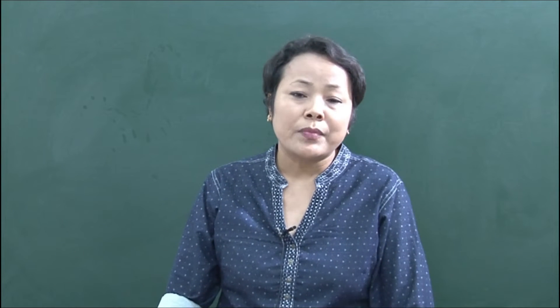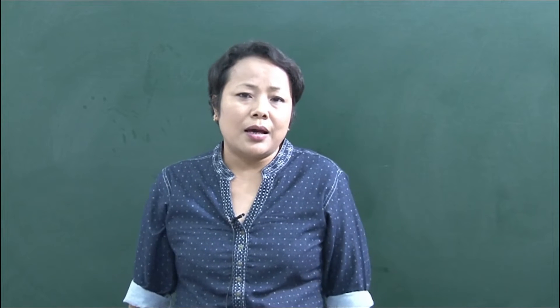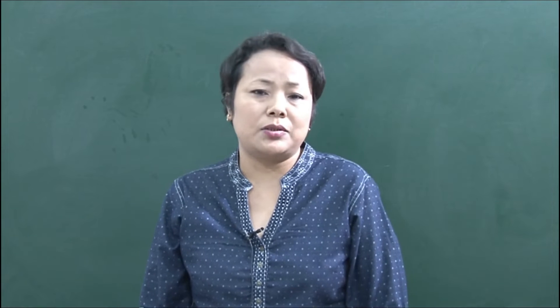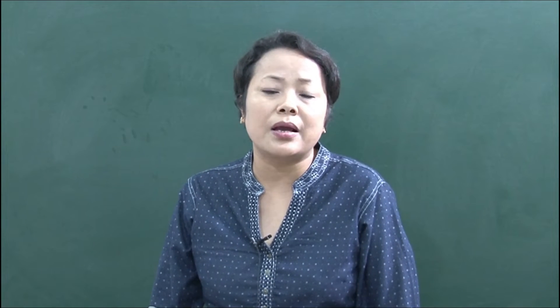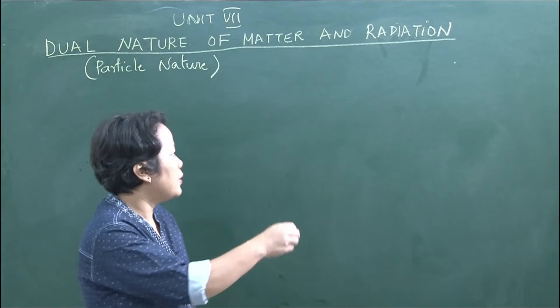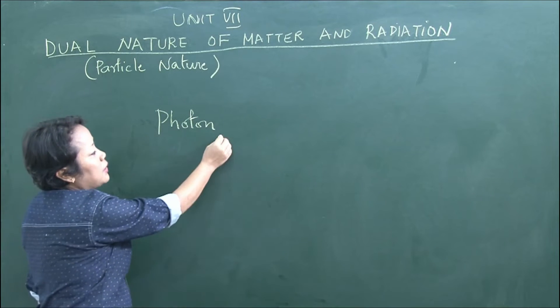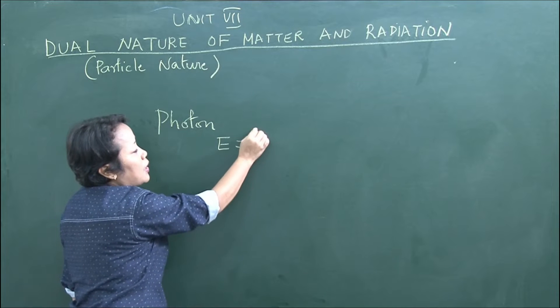Light consists of packets of energy called photons. The photon energy is given by E equals h nu, where E is the photon energy.